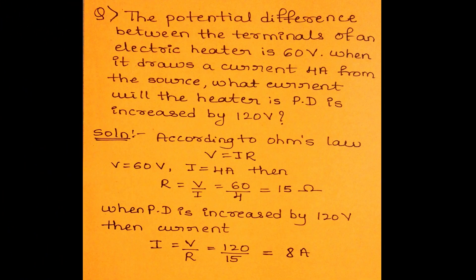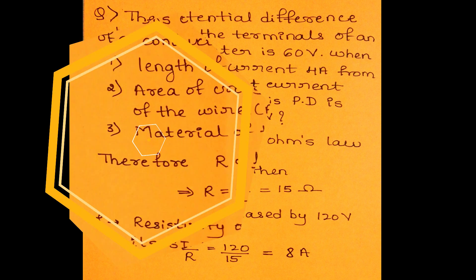Now, let us solve an example. A potential difference between the terminals of an electric heater is 60 V. When it draws a current of 4 Ampere from the source, what current will the heater draw if the potential difference is increased to 120 V? Potential difference is 60 V and current is 4 Ampere. According to Ohm's law, V equal to IR, which implies R equal to V upon I. On substituting the values, we get R equal to 15 Ohm. If the potential difference is increased to 120 V, then again by applying Ohm's law, we get current I equal to 8 Ampere.